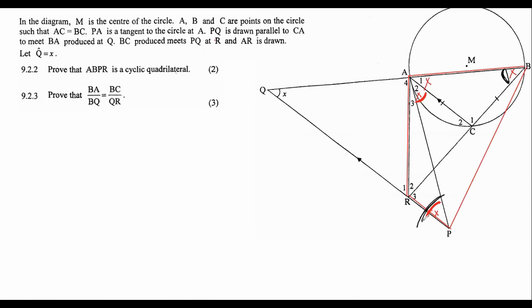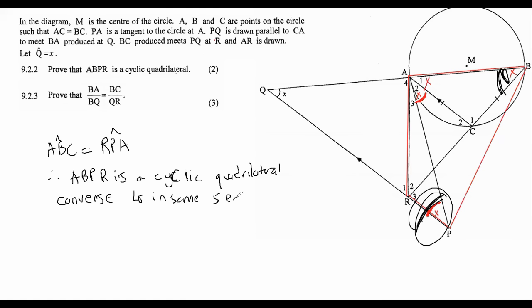It is this angle over here is the same as this angle over here. And so we can see that there's like a bow tie kind of thing happening over there. And so we can say that angle ABC is equal to angle RPA, which is this one over here. And so therefore, ABPR is a cyclic quadrilateral. And the reason will be converse angles in same segment. Because normally when you have a bow tie, when these are the same, you would say angles in the same segment. But when it's the other way around, when you're trying to prove that something is a cyclic quad, you say converse, which almost means opposite.